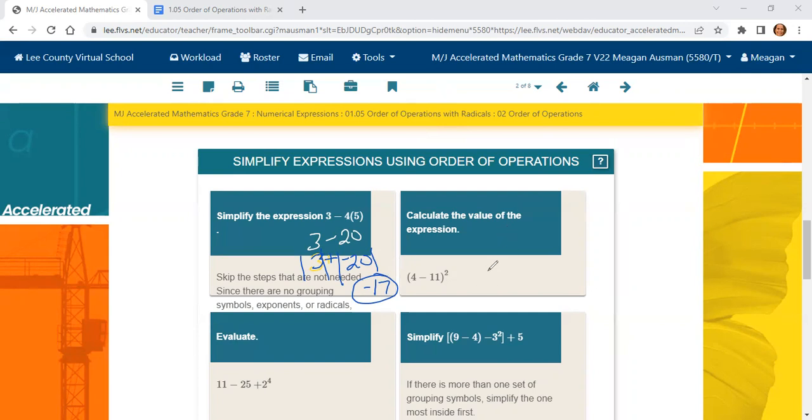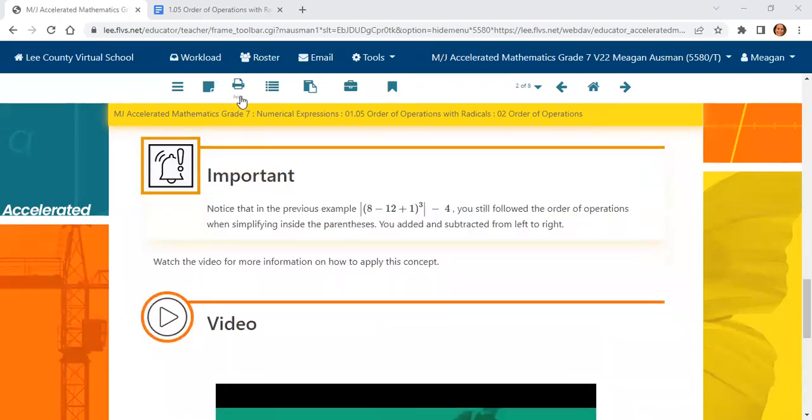Let's do one more. You guys can come back to this and practice it on your own, but we have (4 minus 11) to the second power. We have to do 4 minus 11 first, and that's 4 plus negative 11, which is negative 7 squared. Remember that negative 7 was inside a parentheses. So it's negative 7 times negative 7, which is positive 49. Alright, so those were kind of simple, just kind of getting started questions.